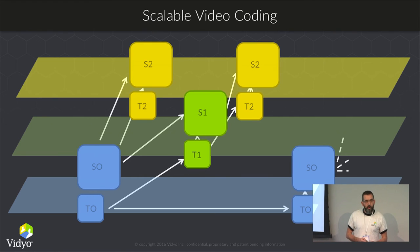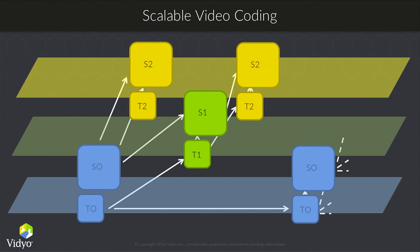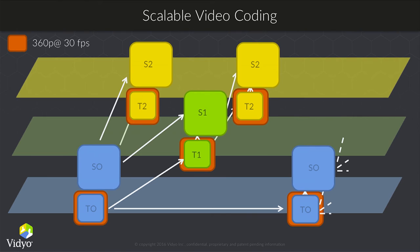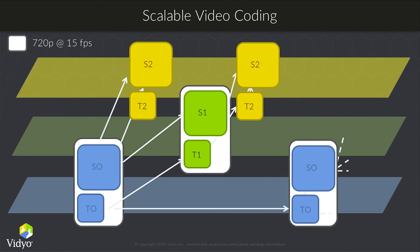Expanding this to a full picture of interdependency, we now have both spatial and temporal scalability in a specially encoded stream. This allows the intermediary router to pick any frame rate or resolution it chooses. For example, you can send one stream up to the server and the server can decide to prioritize frame rate — using the highlighted T0 packets, it can deliver 30 fps in SD. Or if resolution is preferred, it can create a 720p stream at 15 fps. All this can happen dynamically and on the fly.